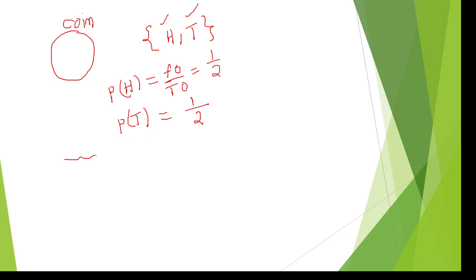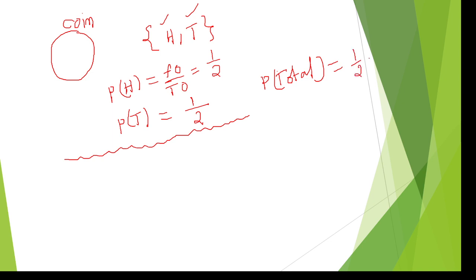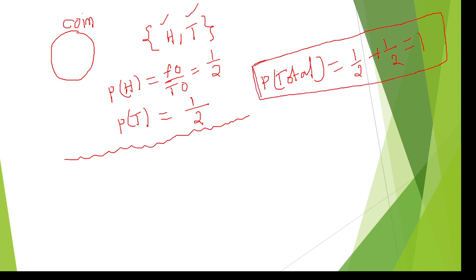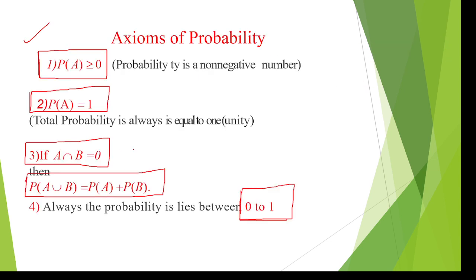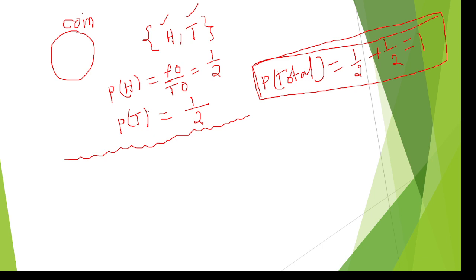This is before completion of the experiment. The total probability here is the probability of head plus probability of tail, which equals one-half plus one-half, equal to one. Always the maximum probability is equal to one — that is the second axiom. The maximum probability is always equal to one if you consider any experiment.